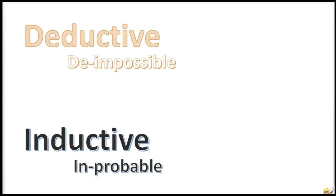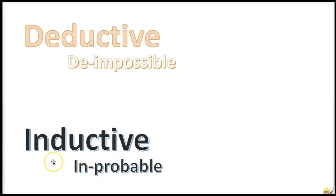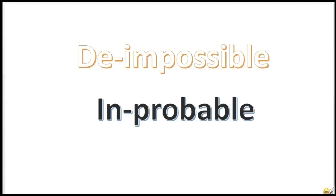What's the difference? As you've learned in the last videos, deductive arguments — if you assume that the premises are true, then it would be impossible for the conclusion to be false. In inductive arguments, if you assume the premises are true, it would be improbable that the conclusion is false. So: the impossible versus the improbable.